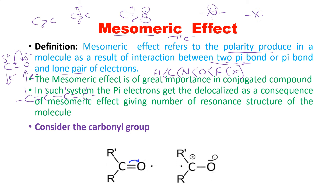Understand the concept of localized and delocalized electrons. Localized means there is no movement of electrons, while delocalized means there is movement — shifting of the electron pair. This electron pair is always involved because the bond is formed due to sharing of electrons, and the covalent pi bond is formed in this way.